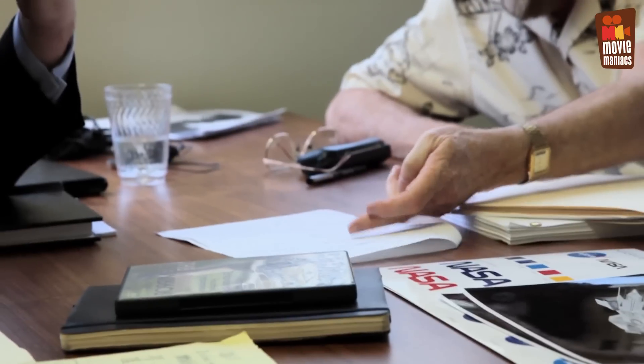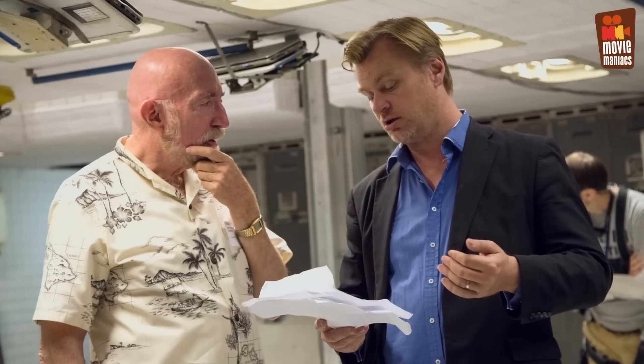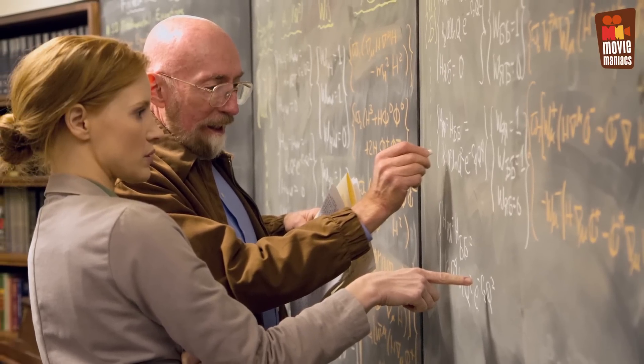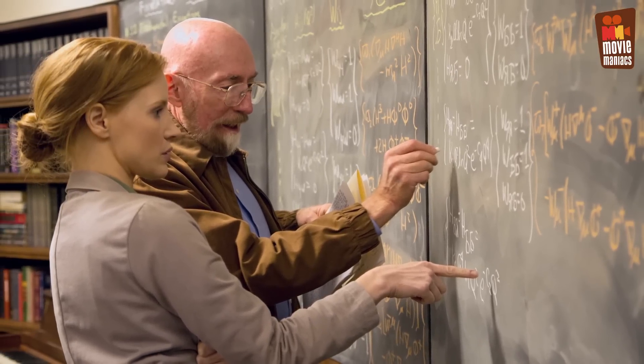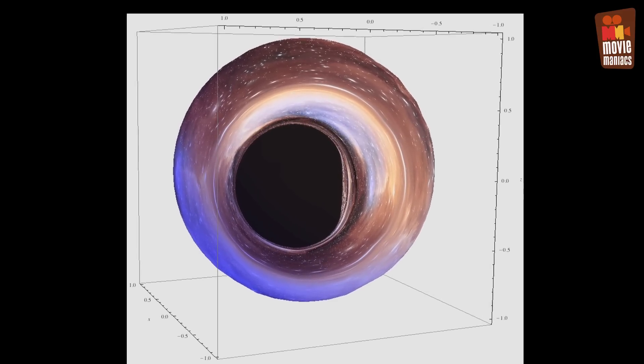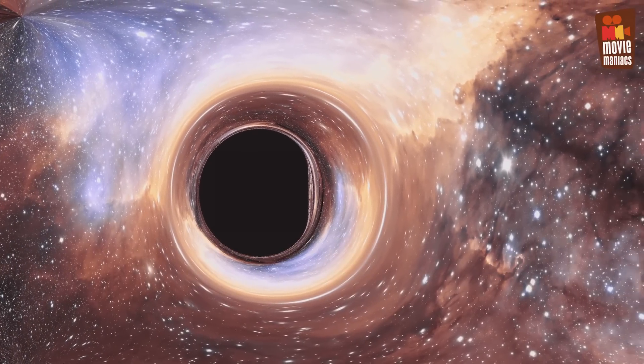Neither wormholes nor black holes have been depicted in any Hollywood movie in the way that they actually would appear. This is the first time the depiction began with Einstein's general relativity equations. The visual effects department under Paul Franklin and everybody at Double Negative took Kip's mathematical data and created real visual representations of what a black hole is meant to look like.